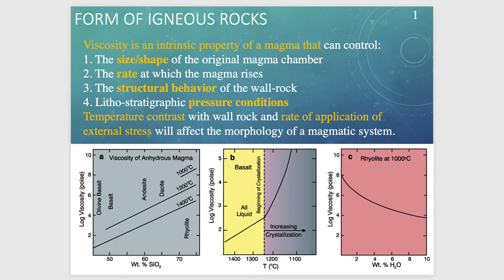Lithostatic pressure conditions — the relationship between pressure and the force of the magma plume — exert control on magma behavior. Temperature contrast is also important: whether the surrounding rock is cool or hot relative to the magma regulates the type of crystallization at the boundaries of a magmatic chamber, potentially resulting in chill margins where much finer-grain crystallization occurs on the edge of a chamber.